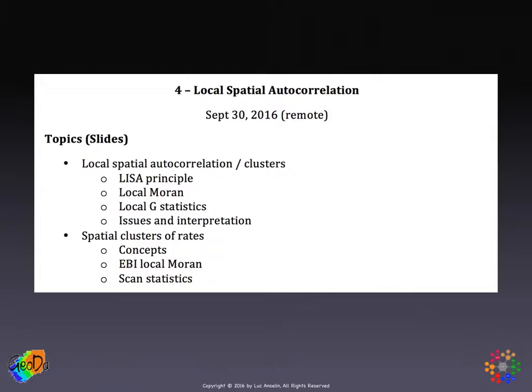We'll close with some discussion of issues and interpretation features. Then the discussion of the spatial clusters of rates starts by delving into what is a proportion or a rate, what are its statistical properties, and what does that do to the analysis of spatial autocorrelation. The main aspect here is variance instability, which violates some of the major assumptions behind spatial autocorrelation.